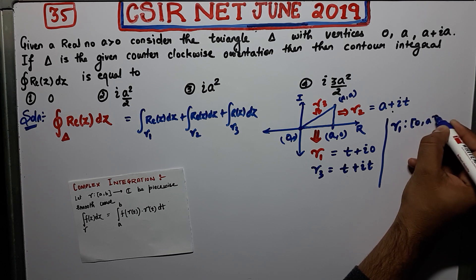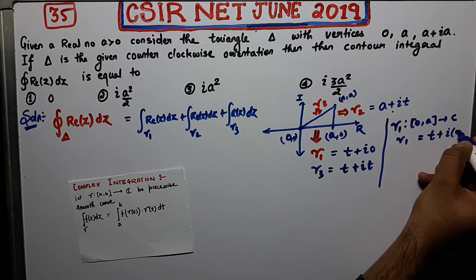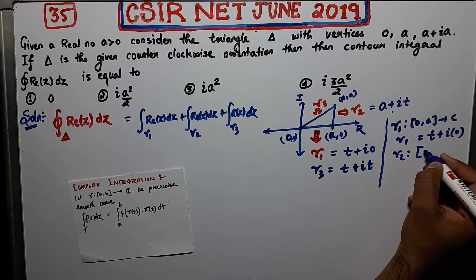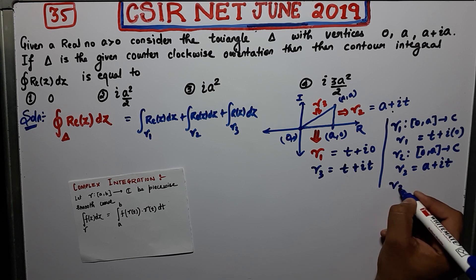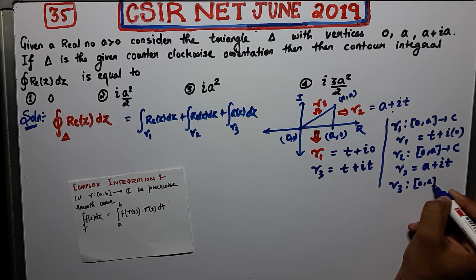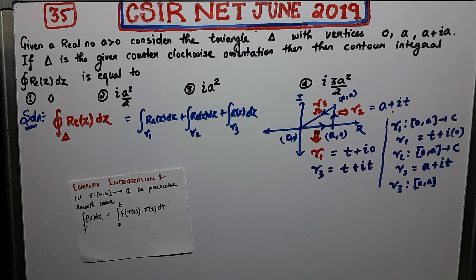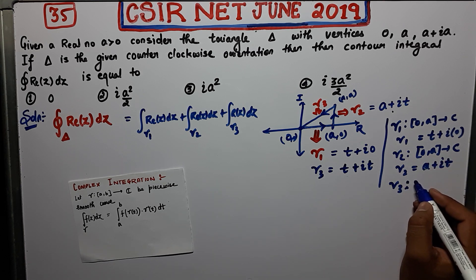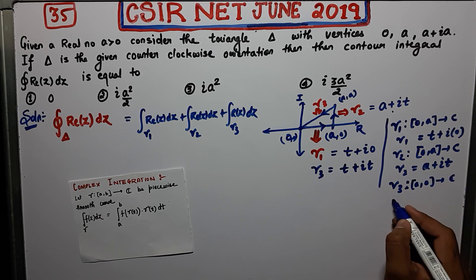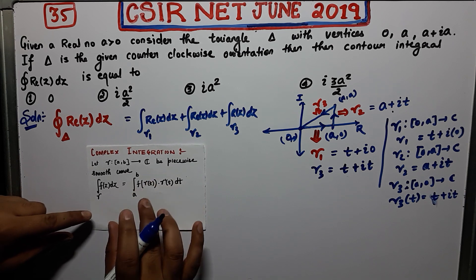Gamma 1 is a smooth function from 0 to a, given by gamma 1(t) = t + i·0. Gamma 2 is a function from 0 to a, given by gamma 2(t) = a + it. Gamma 3 goes in the reversed direction — since we are using the clockwise (anticlockwise) orientation — so it goes from a to 0, and gamma 3(t) = t + it.